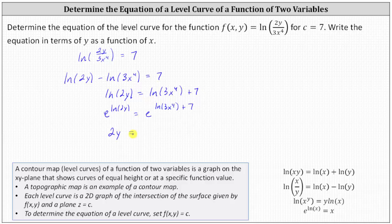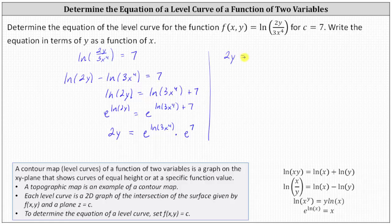Remember, when multiplying with the same base, we add the exponents — and here we have a sum of exponents. So we write the right side as e^(ln(3x⁴)) × e⁷. In this form, e^(ln(3x⁴)) simplifies to 3x⁴. So we can now write the equation as 2y = 3x⁴ · e⁷.